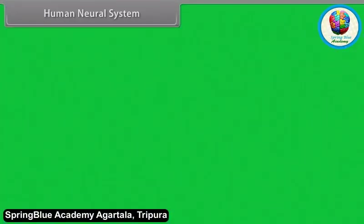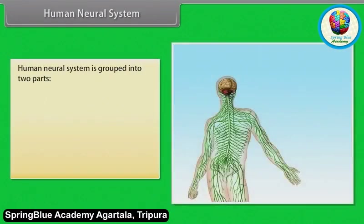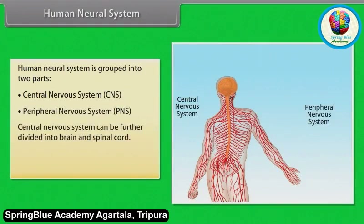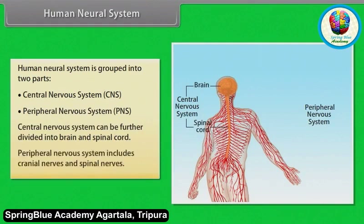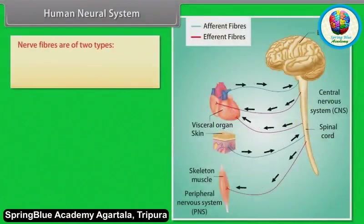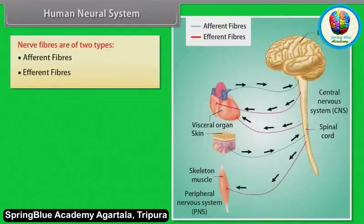The human neural system is grouped into two parts: the central nervous system and the peripheral nervous system. The central nervous system can be further divided into brain and spinal cord. The peripheral nervous system includes cranial nerves and spinal nerves. Nerve fibers are of two types: afferent fibers and efferent fibers.